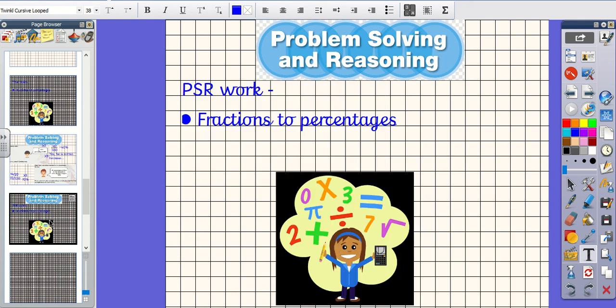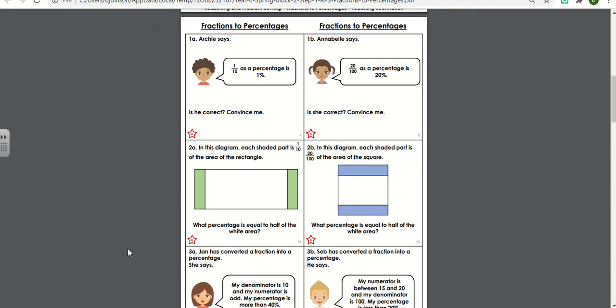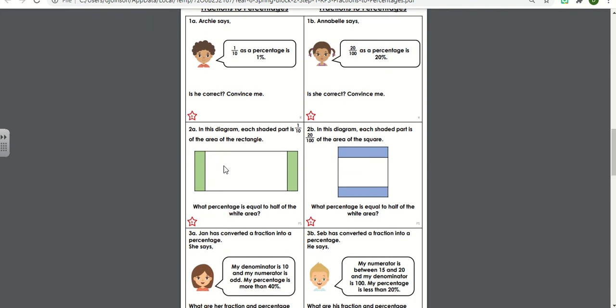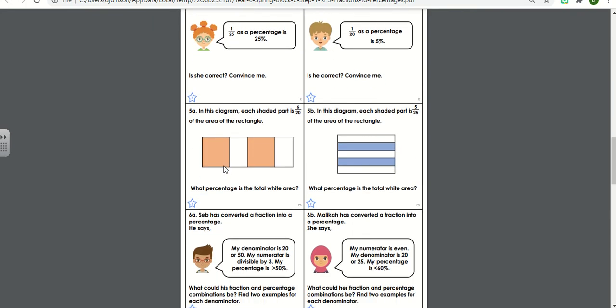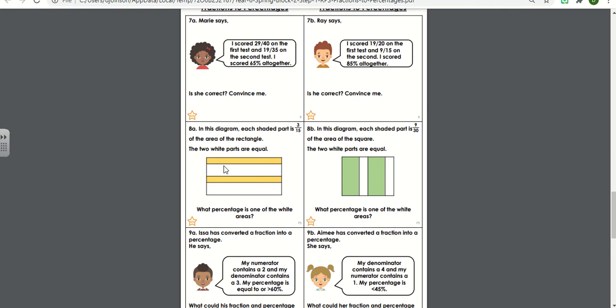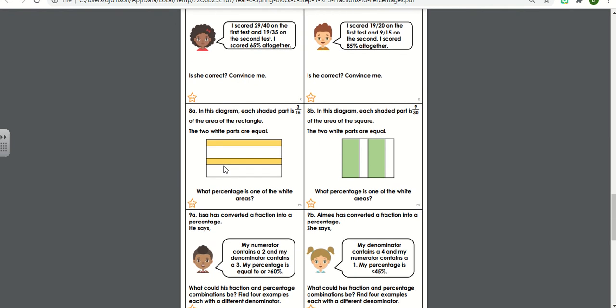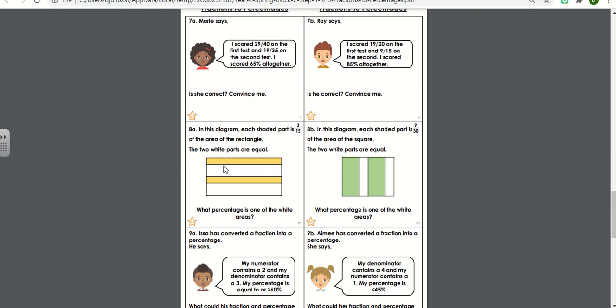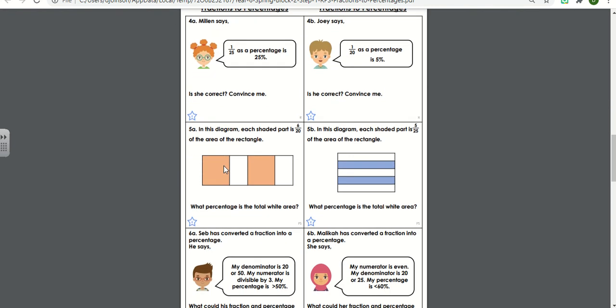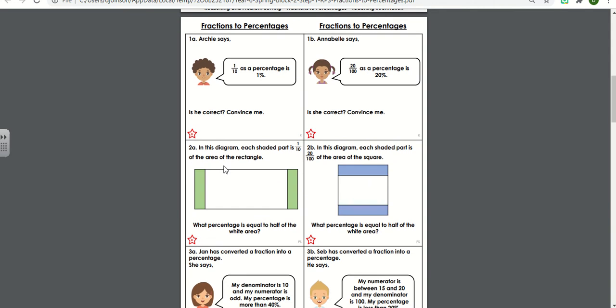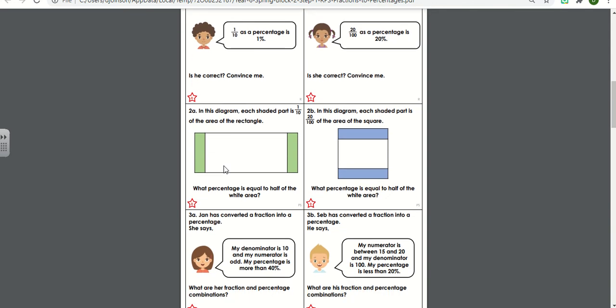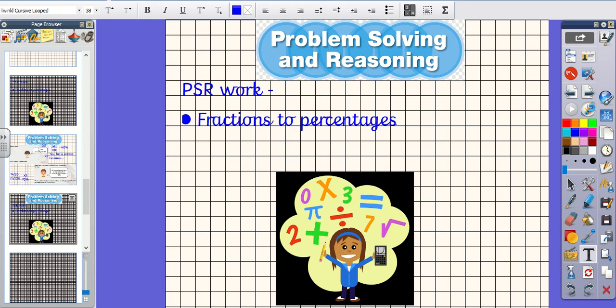Your work today, then, is problem solving and reasoning work. Fractions to percentages. Questions 1, 2, and 3 for bronze. Questions 4, 5, and 6 for silver. And questions 7, 8, and 9 for gold and platinum. Remember, only complete 3 of those questions, not all 6, or not 1 to 9. Have a great day. Don't forget to upload your work to your portfolio on ClassDojo. And email your teachers if you need any help or support. Bye.